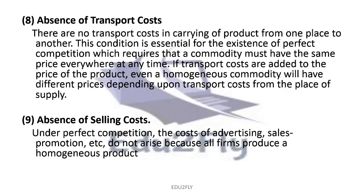Next is the absence of transport costs. When goods move from one place to another, there would normally be transport costs. However, absence of transport costs is an essential condition of perfect competition.